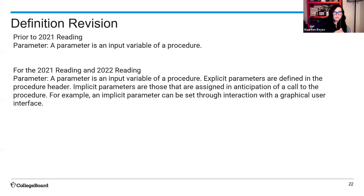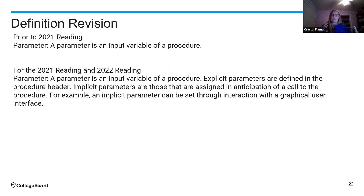If a student uses more than one list, it's tricky for readers because they're trying to understand whether the student truly understands. It's better if students choose one list as an example and really focus in on what that one list is doing — even if it works alongside other lists. They really need to communicate their understanding by focusing on one list and explaining what it does in the program.